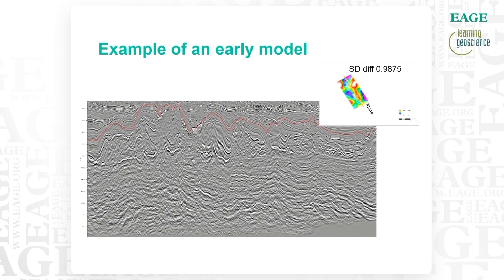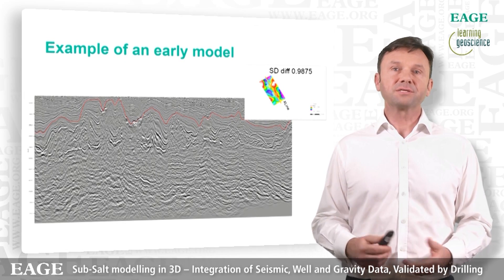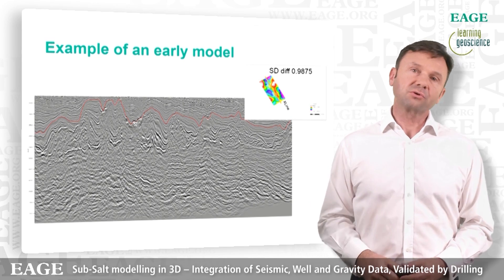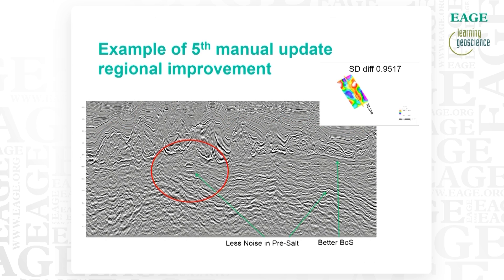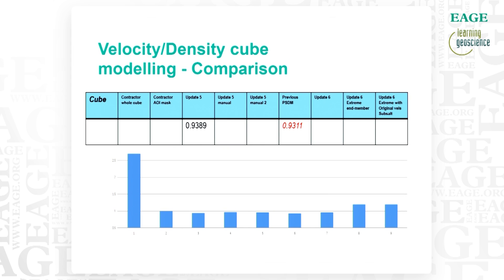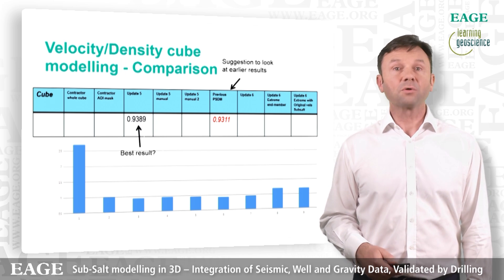As an example of the improvements seen by looking at different velocity models used for depth migration: this is a section through our area of interest with the discernible base salt closure. After several updates of the velocity model in comparison with the calculated and observed gravity data, we ended up with our fifth manual update with improved imaging — there is more coherency on the base-of-salt reflector, better definition in our base-of-salt closure area circled in red, and improved sub-salt reflections. A summary table shows Update 5 as one of the best results, with best sub-salt imaging, while an earlier update also produced a minimization in the gravity error — suggesting we revisit those results.